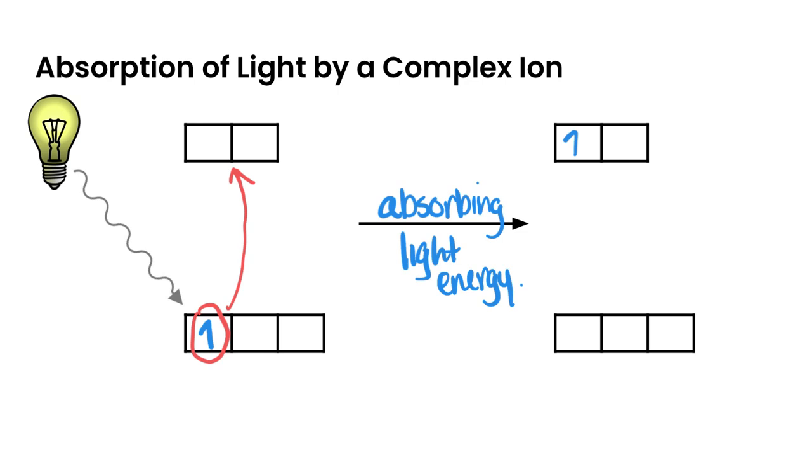It's kind of similar to what we saw when we looked at the absorption of light and electrons being promoted up to higher energy levels in the hydrogen atoms. So the same sort of thing is happening here, except the electrons are being promoted within the d orbitals themselves. It's just now we have this splitting pattern, so they're going from the lower set into the higher set of d orbitals.